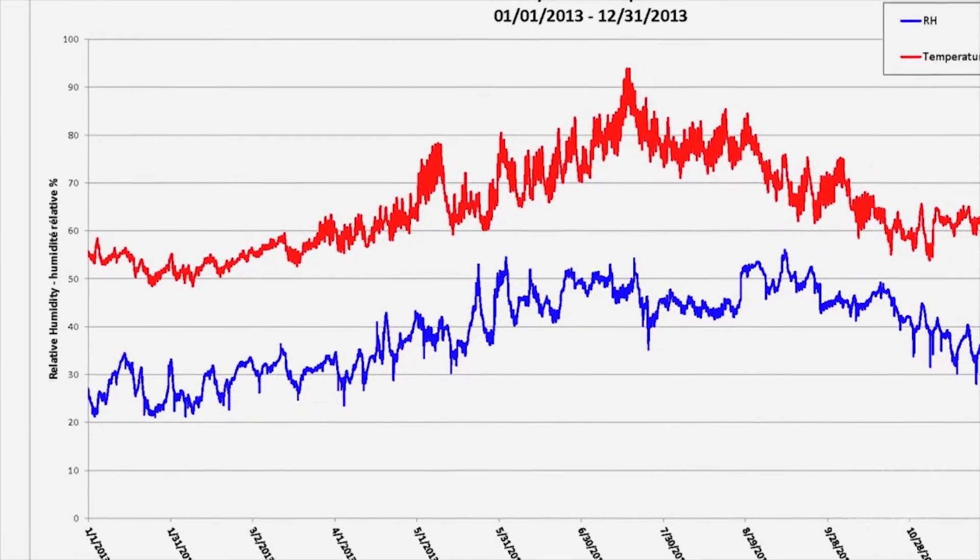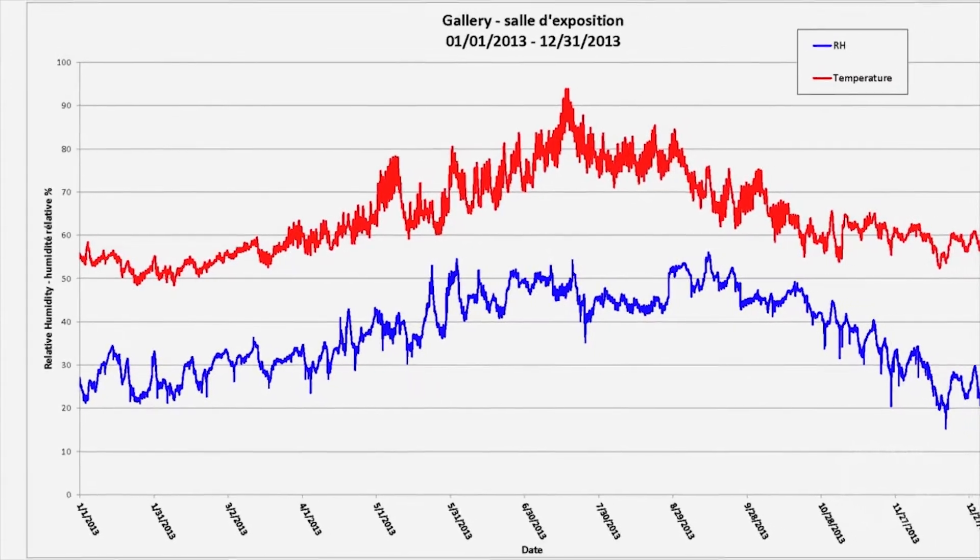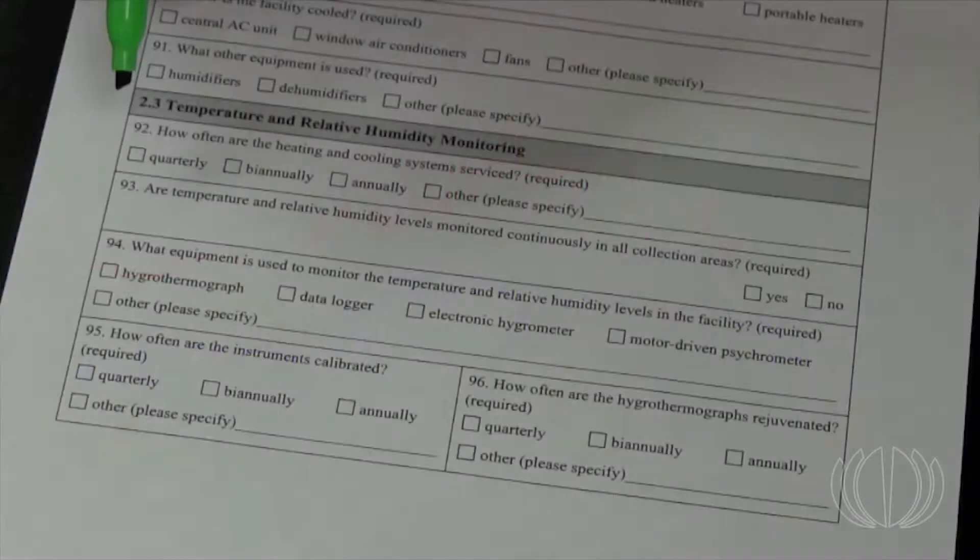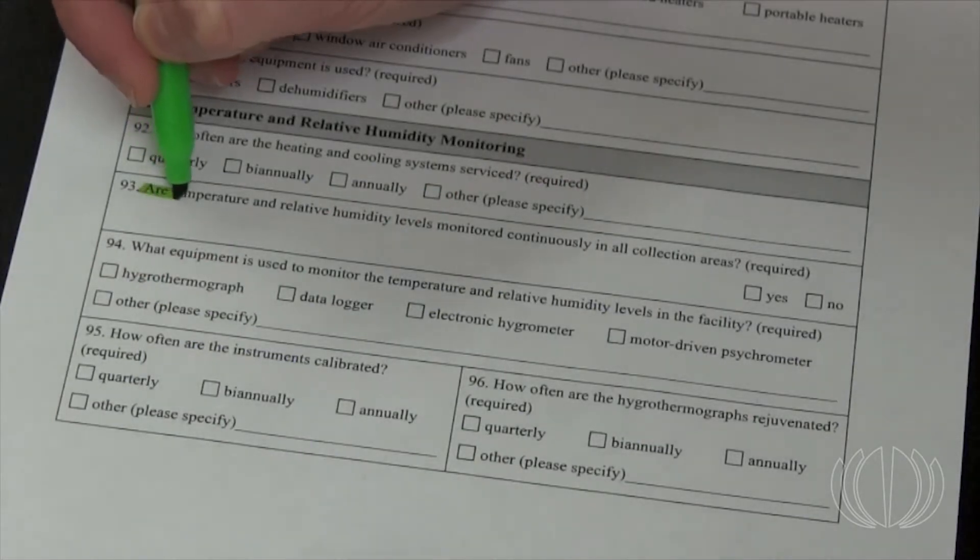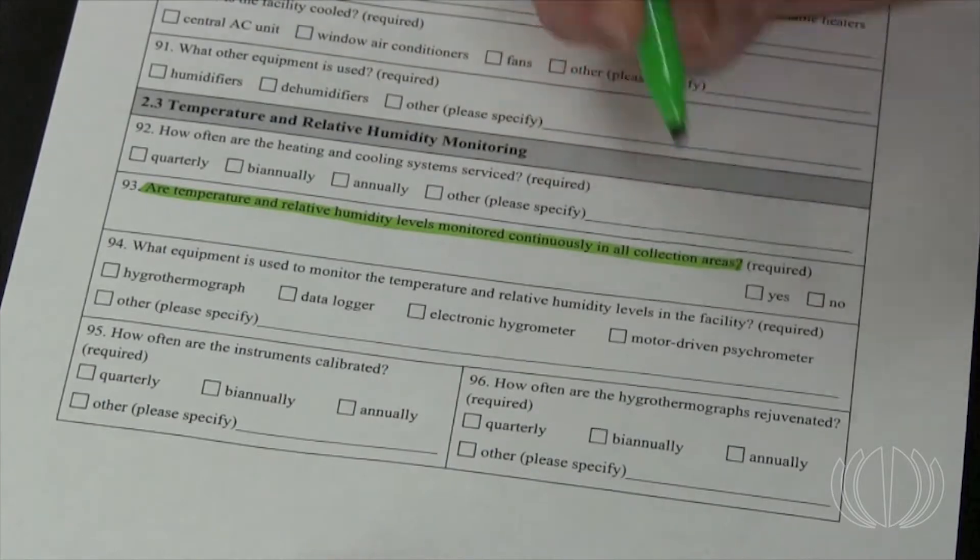By keeping records on temperature and RH in your facility, you have the data readily available if you need to seek advice on climate control. These records also become essential when applying to various heritage programs that require evidence of your facility's conditions.